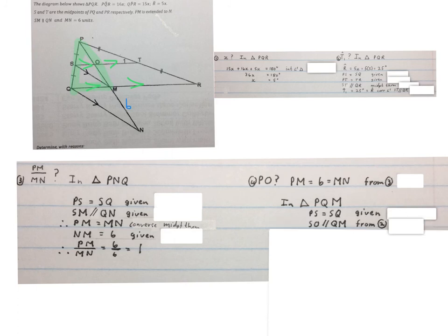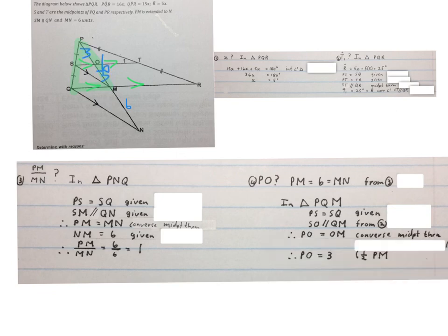PS is equal to SQ, given. Then we can write SO is parallel to QM. We did that in question 2. Then we will write PO is equal to OM, converse of the midpoint theorem. So that one is equal to that one. Therefore PO is equal to 3, the half of PM. You don't have to put this reason in. Please stop the video and get your brain around this last one.